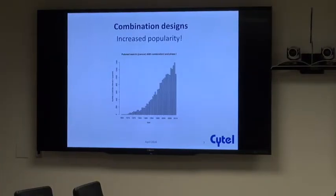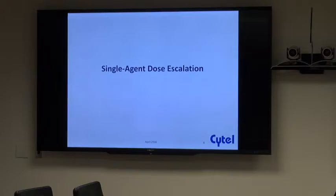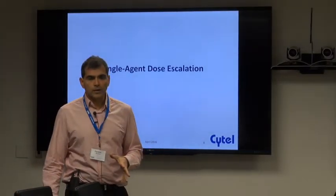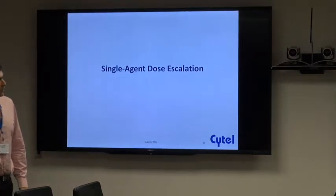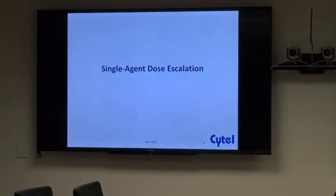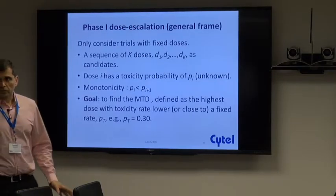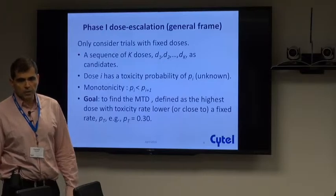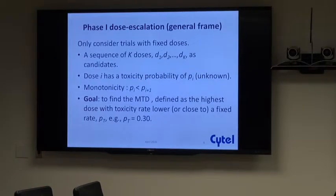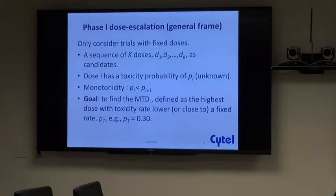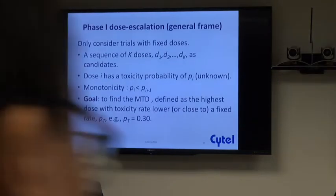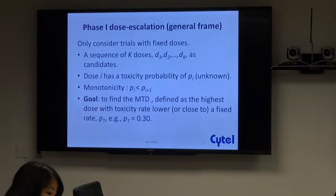With single dose escalation, I'm just going to do a rundown of the methods. The background and notation: we'll have a sequence of fixed doses d1 up to dk, each with an unknown probability of toxicity. The higher the dose level, the higher this unknown probability of toxicity — so we have this concept of monotonicity. Our goal is to find the maximum tolerated dose: the highest possible dose with a toxicity rate hopefully lower than a target toxicity rate predefined at the beginning.